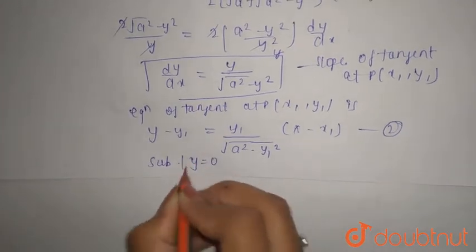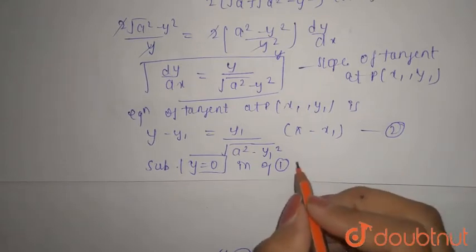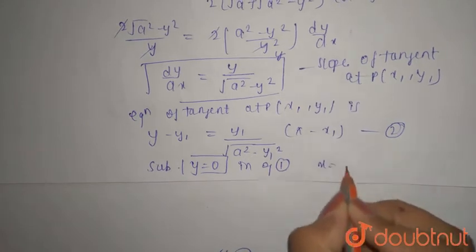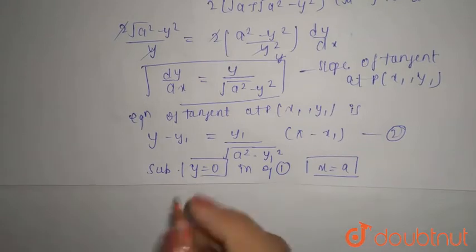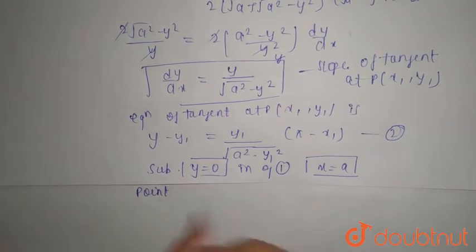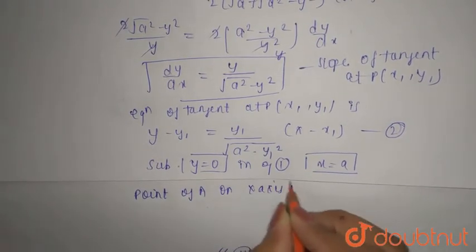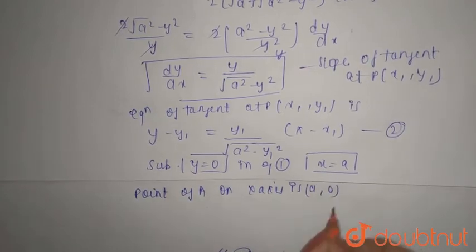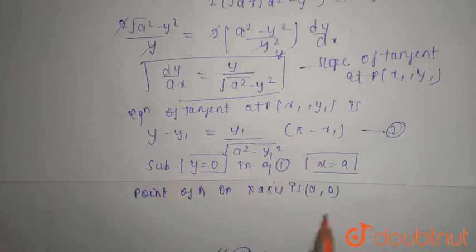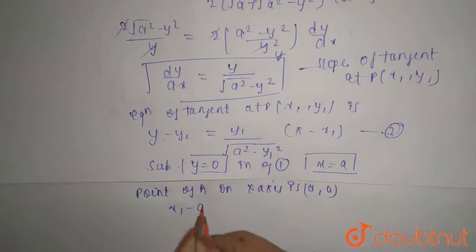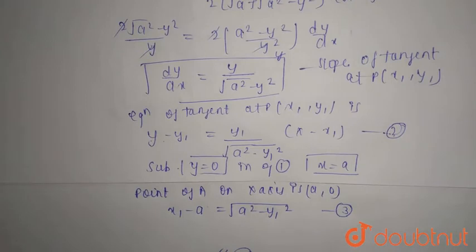Substituting y = 0 in equation 1, we get x = a. So the point on the x-axis is (a, 0) because y = 0. Since the tangent given by equation 2 passes through (a, 0), putting y = 0 gives x₁ minus a equals root(a² - y₁²). This is equation 3.